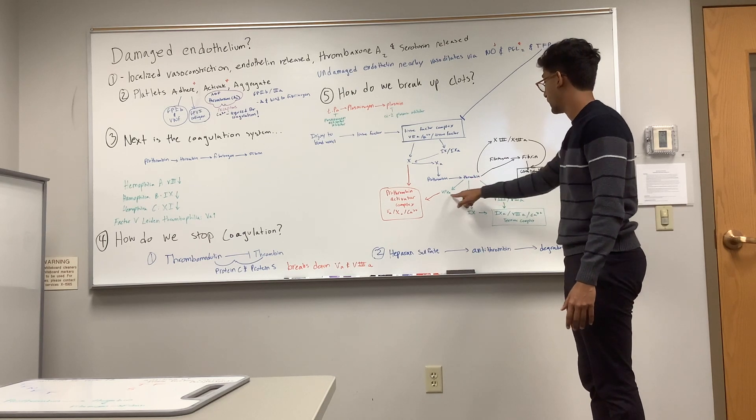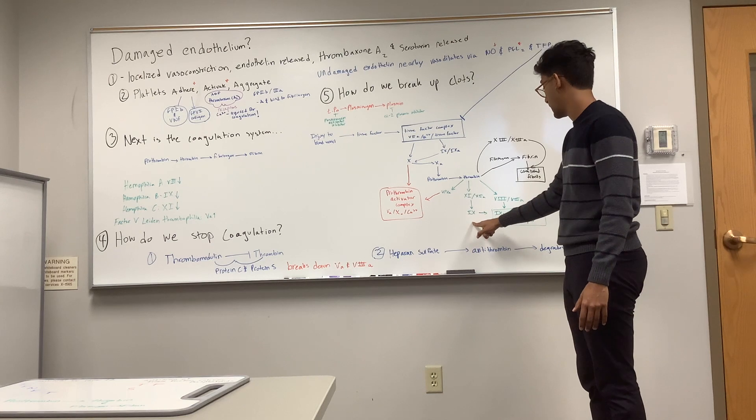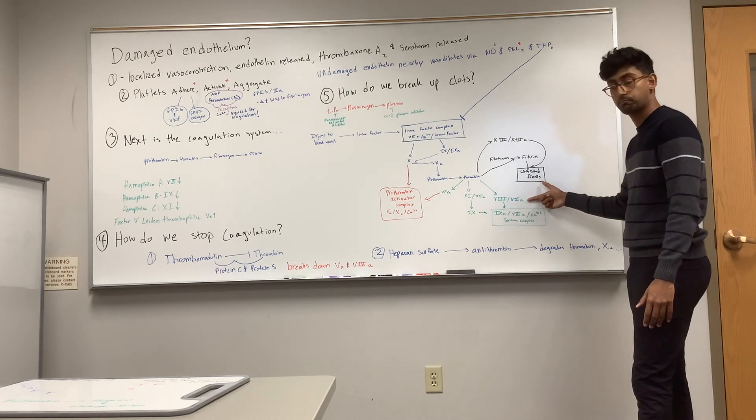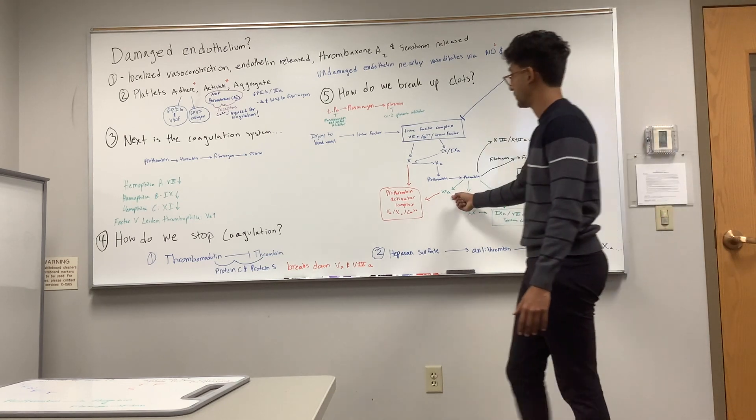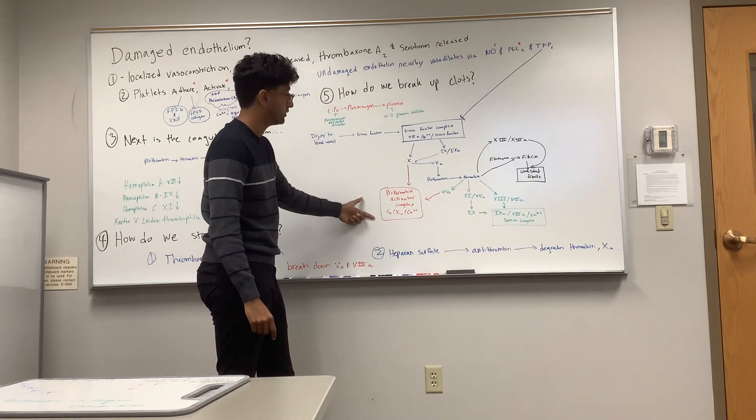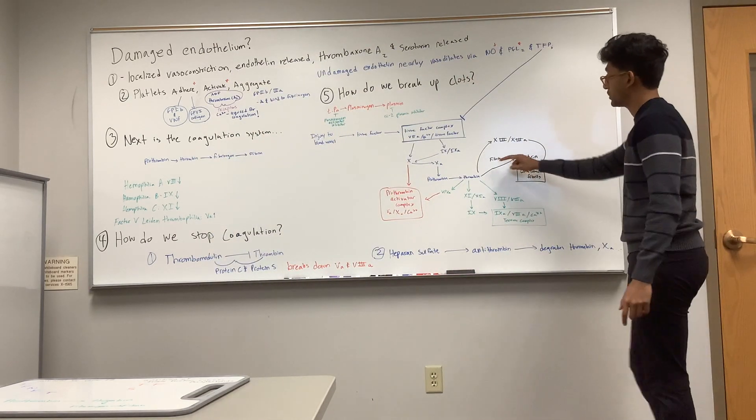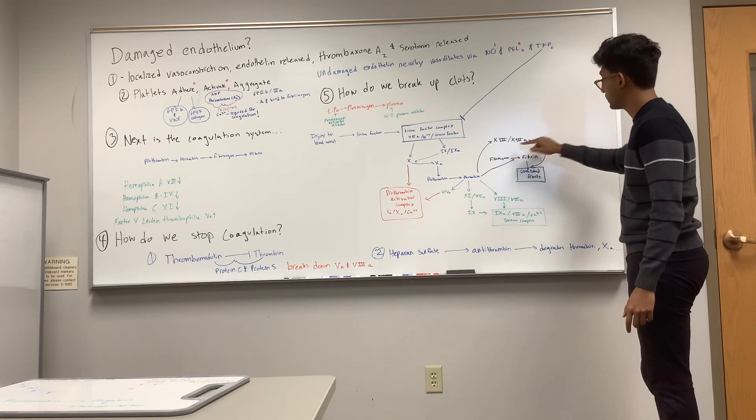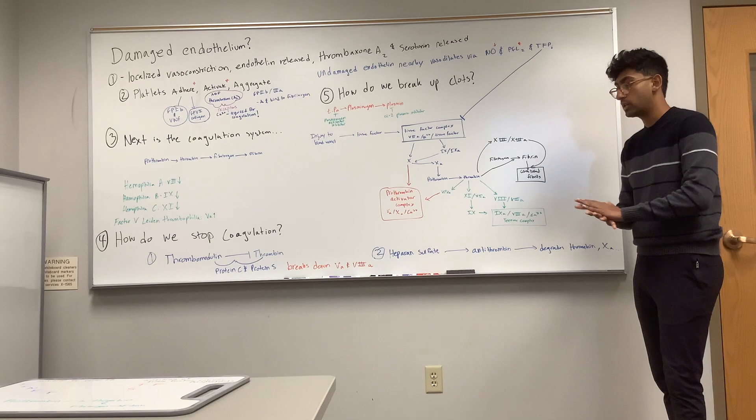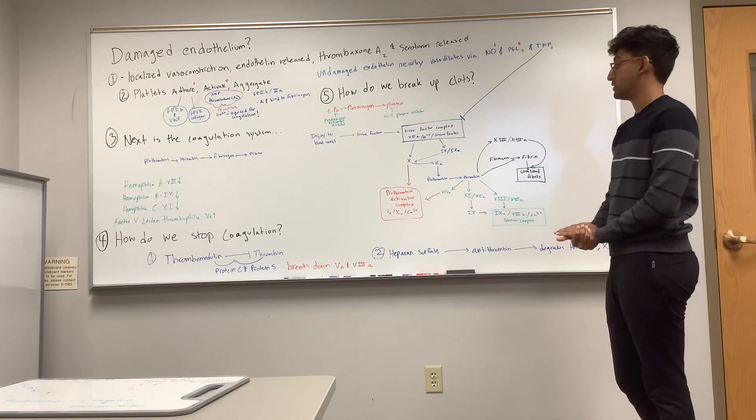Thrombin is going to activate 5, 11, and 8. Eleven is going to activate 9, and 9 is going to form the tenase complex with 8. Five also helps make the prothrombinase activator complex along with 10. Thrombin also helps create fibrin from fibrinogen and activates factor 13. And 13 comes over here and makes crosslinked fibrils—we're just kind of putting glue on the fibrins to make sure they're more stable and they stay.